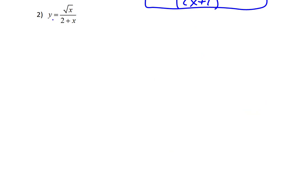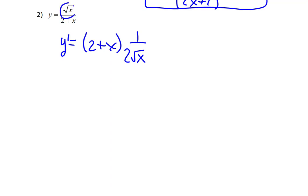Let's try a second example: y equals the square root of x over 2 plus x. This is set up as a quotient. Applying the quotient rule, y prime equals low — that's 2 plus x — times d high. The high is square root of x; its derivative, treating it as x to the 1/2, is 1 over 2 square root of x. You can verify that using the power rule if needed.